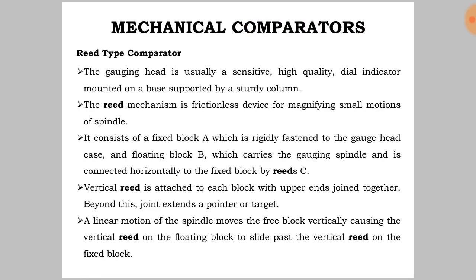The gauging head is usually a sensitive, high quality dial indicator mounted on a base supported by a sturdy column. The reed mechanism is a frictionless device for magnifying small motions of the spindle. It consists of a fixed block A, which is rigidly fastened to the gauge head case, and a floating block B, which carries the gauging spindle and is connected horizontally to the fixed block by reeds C. A vertical reed is attached to each block with the upper ends joined together. A linear motion of the spindle moves the free block vertically, causing the vertical reed on the floating block to slide past the vertical reed on the fixed block.